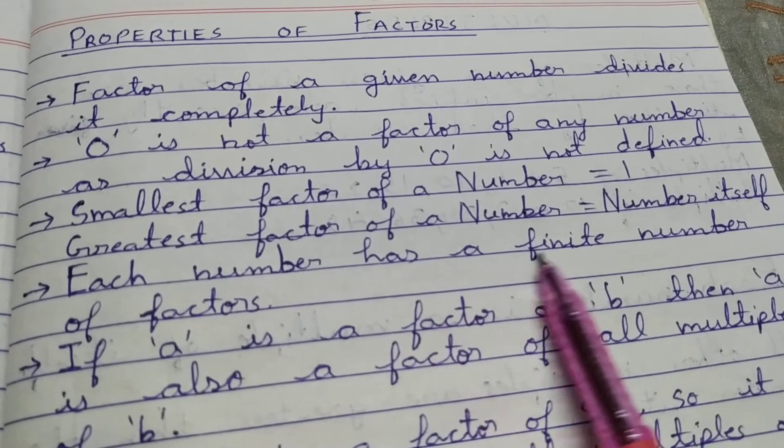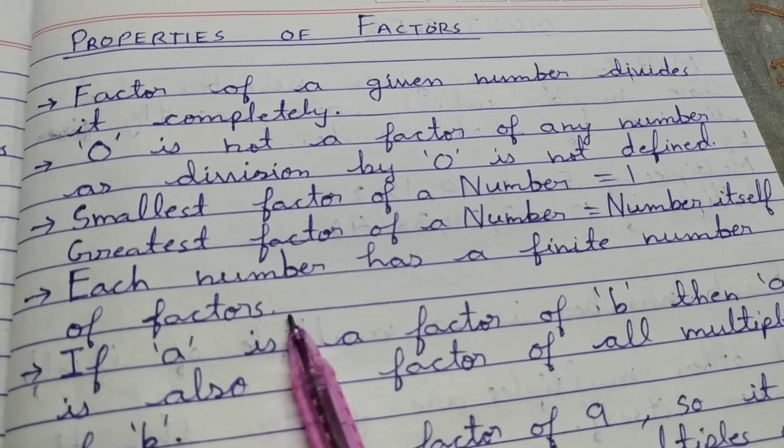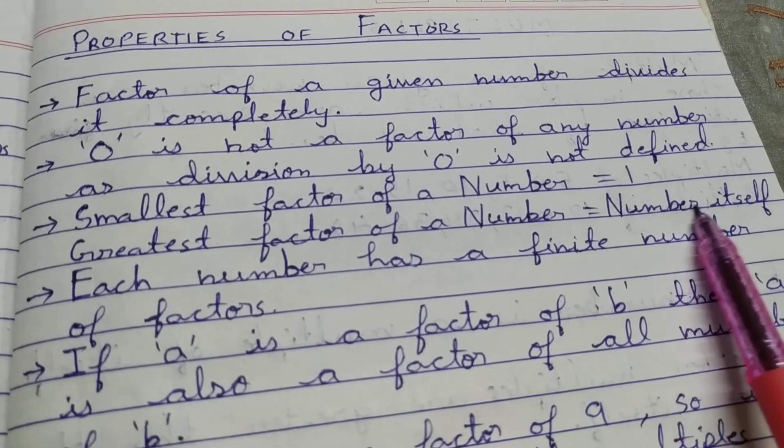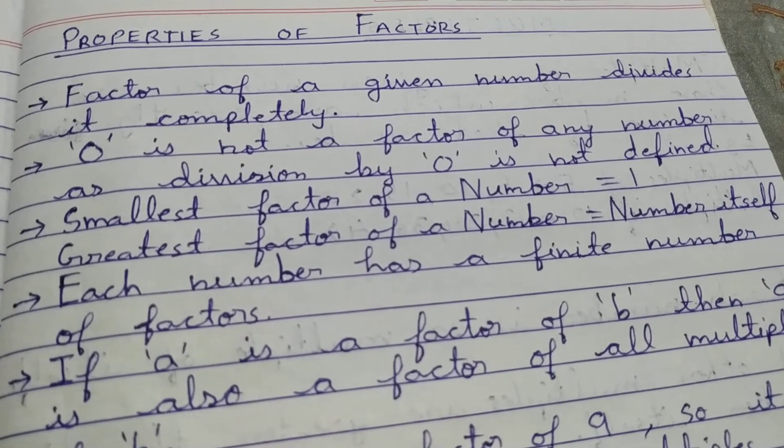Each number has a finite number of factors, as a factor cannot be greater than the number itself, because the number itself is the greatest factor of any number.